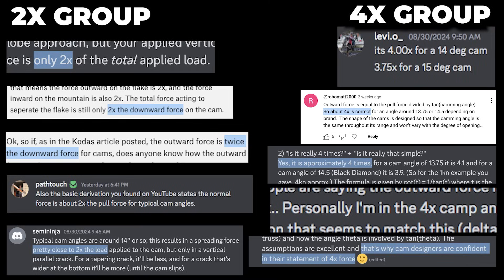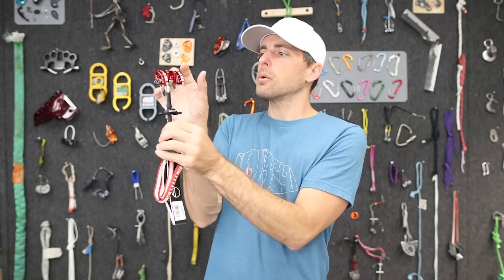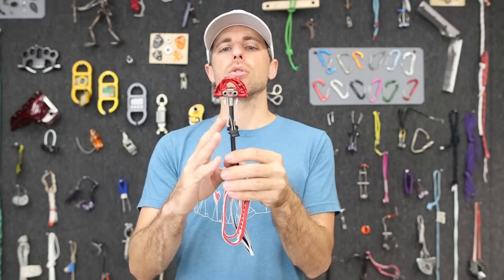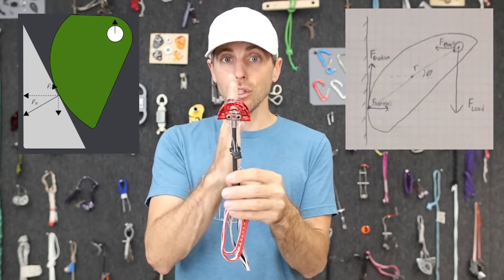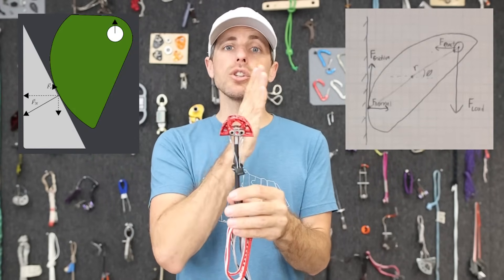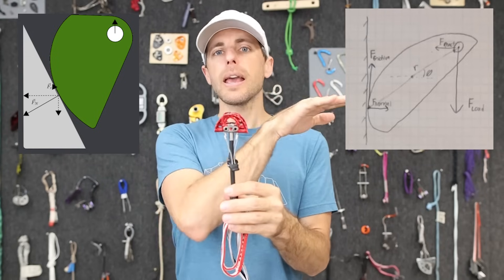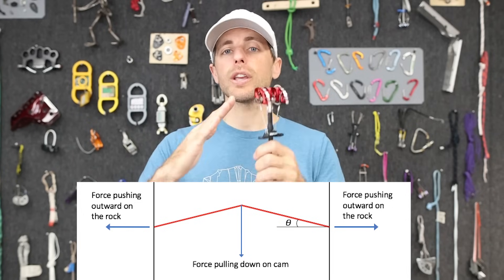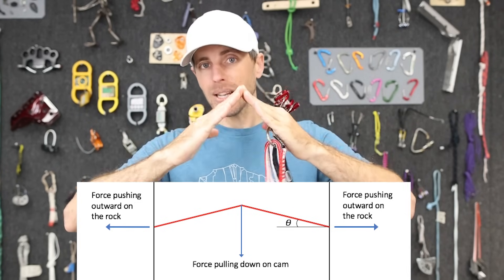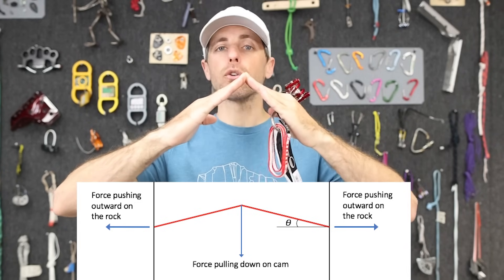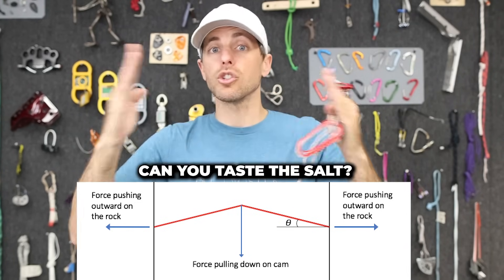To oversimplify, we had about two buckets of people: those who thought it would be four times the force, and those who thought it would be two times the force — meaning if I pull one kilonewton down, we'd have two kilonewtons pushing outward on the rock. There are two main ways to look at this: you can look at a single lobe from the axis point to the contact point and play with triangles, or look at two sides simultaneously. Unfortunately, you can come up with the wrong answer doing it either way.